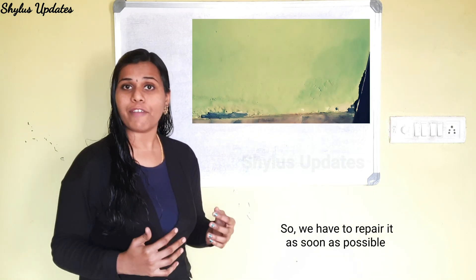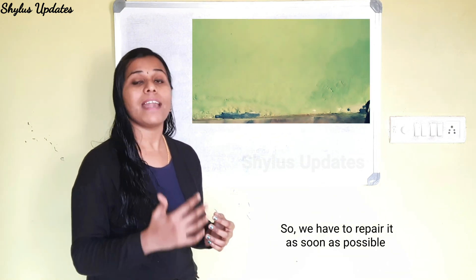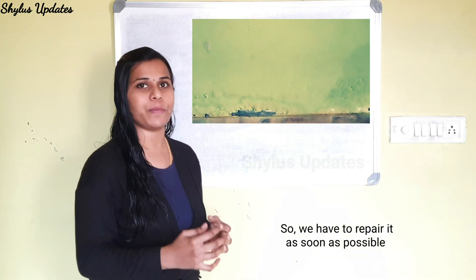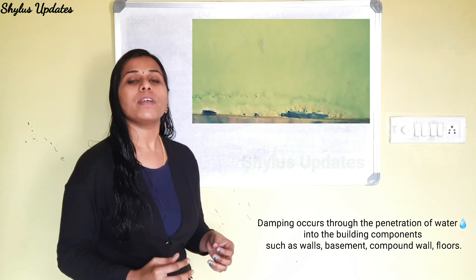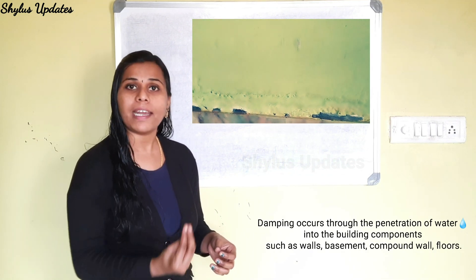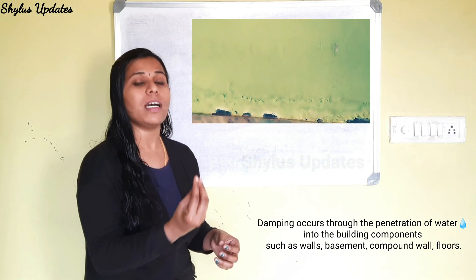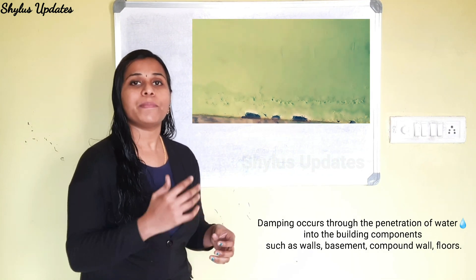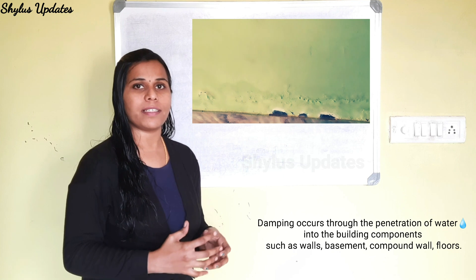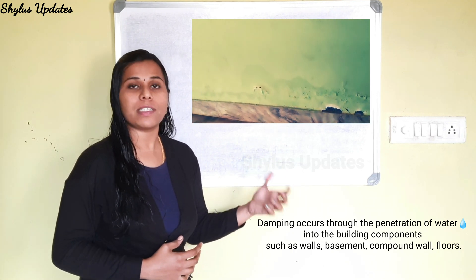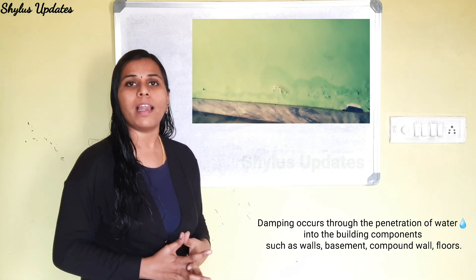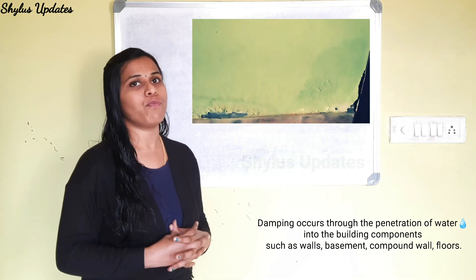So we have to repair it as soon as possible. Dampness occurs through the penetration of water into building components such as from walls, basements, compound walls, and also from floors.